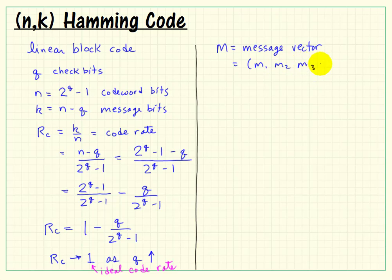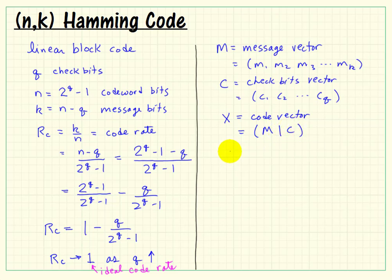We think of the message as being a message vector, capital M, and the components are M1 through MK. Capital C is the check bits vector with a total of Q check bits. These are both row vectors. The code vector X is represented as the combination of the message vector and the check bits vector.